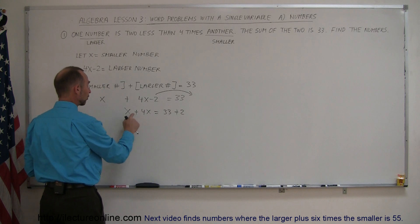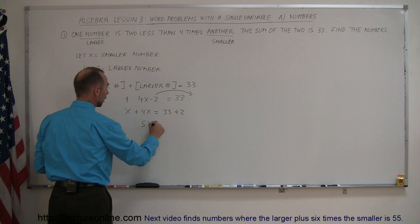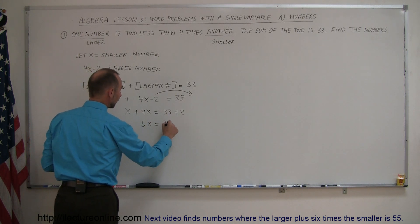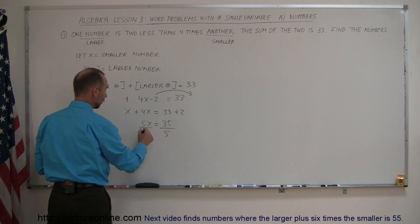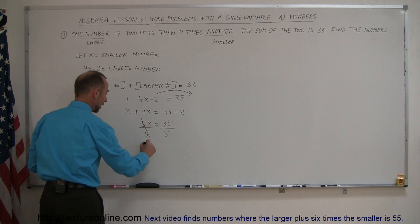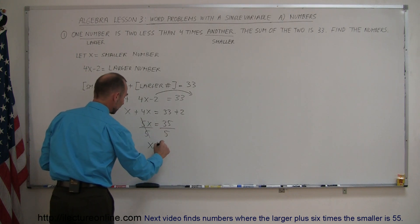Combine like terms on both sides, so x plus 4x is 5x. 33 plus 2 is 35. Now, we divide both sides of the equation by the numerical coefficient in front of x, so that cancels out. And x equals 35 divided by 5, which is 7.